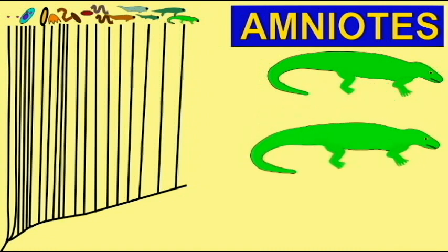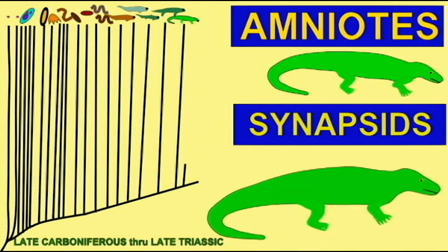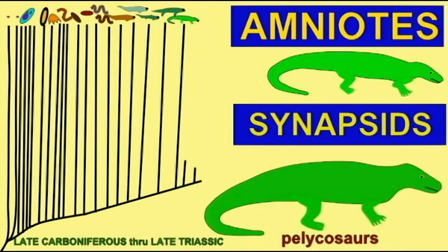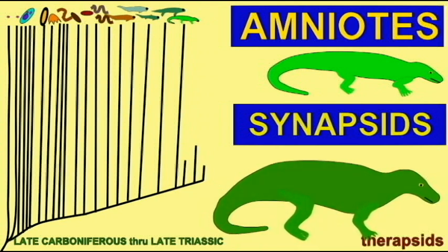And so the Triassic period is significant in the history of mammals, because the mammal-like Cynodonts which begin the Triassic period evolved into the first mammals by the end of this period.